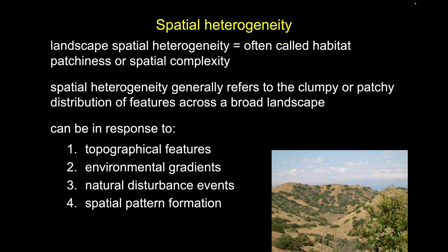Spatial heterogeneity, generally speaking, refers to how clumpy or how patchy given elements of the landscape are — how clumpy the trees are, how patchy the cliffs are, and so on. While there's a huge array of types of heterogeneity we can discuss, generally speaking, we're talking about spatial heterogeneity.